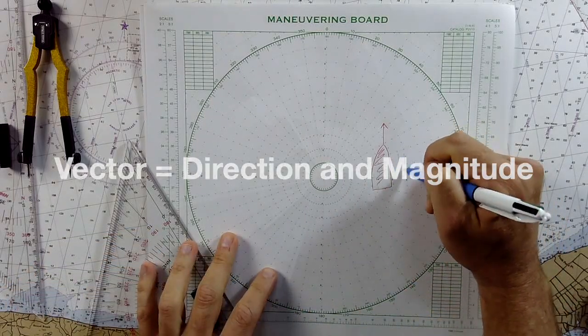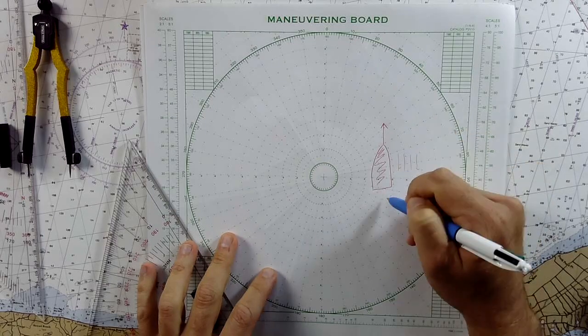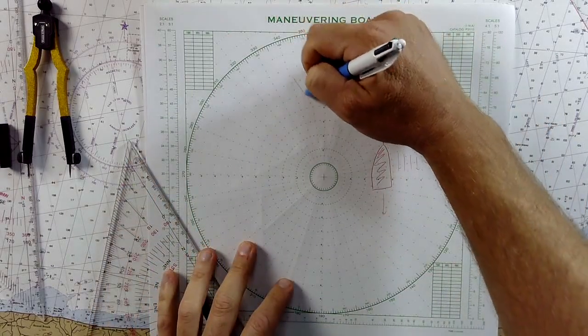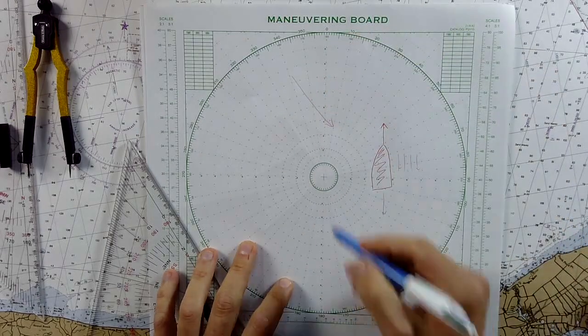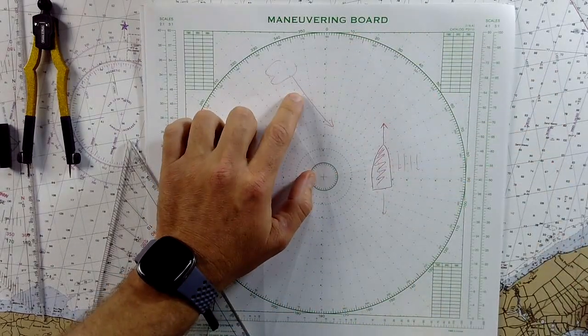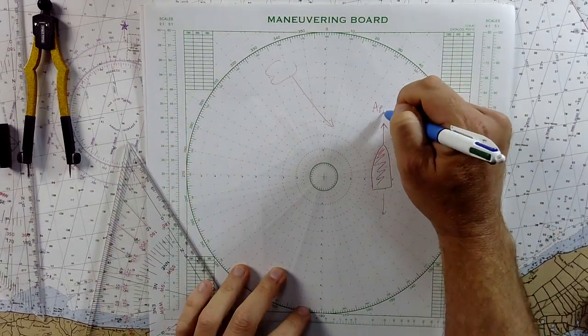So if you're moving, you're generating your own wind in the opposite direction of your course and speed. Likewise, if there's some wind blowing out there from the sky, since you're moving, you're not going to experience the true wind. Instead, you're going to experience the apparent wind.